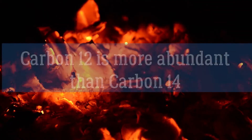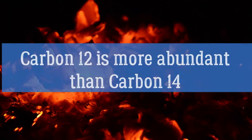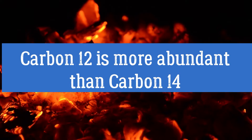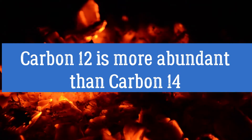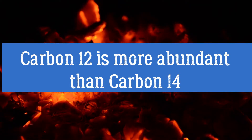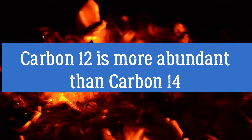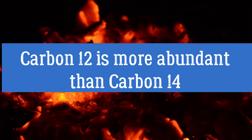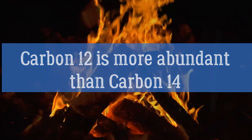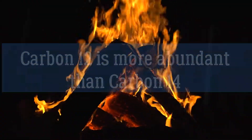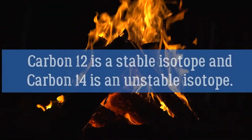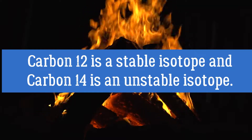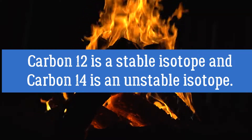Carbon-12 and carbon-14 are isotopes of carbon. Of these two isotopes, carbon-12 is most abundant. These two carbon isotopes mainly differ in their mass number. The mass number of carbon-12 is 12, and that of carbon-14 is 14.